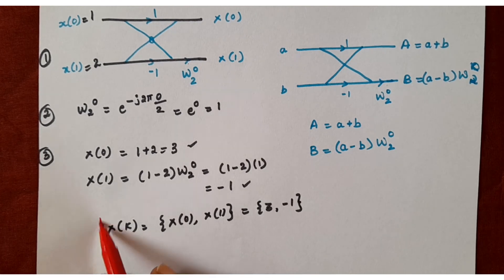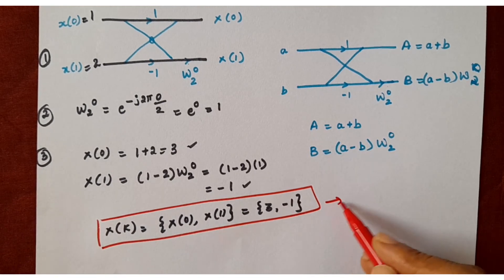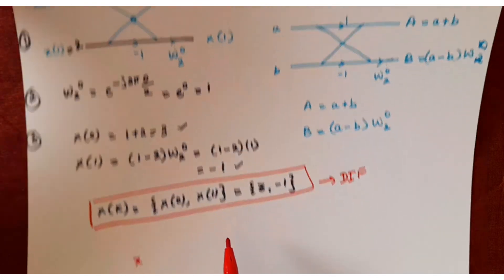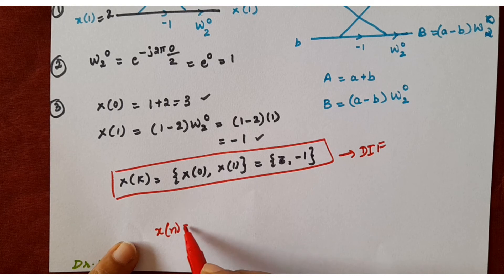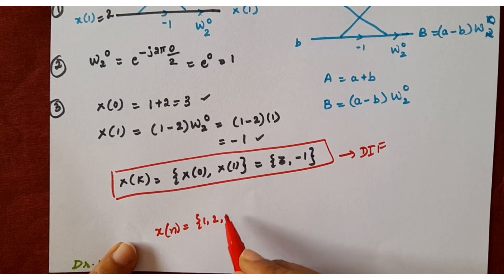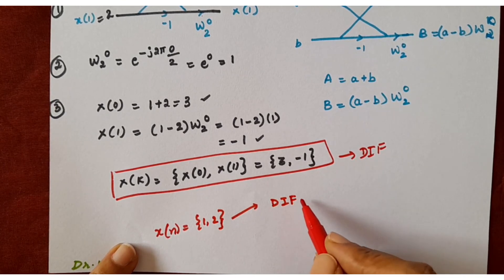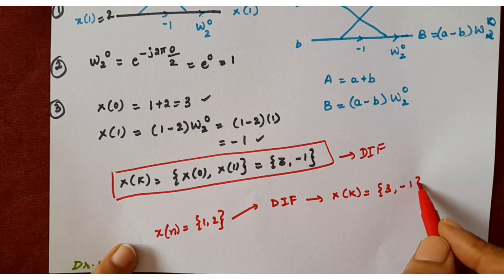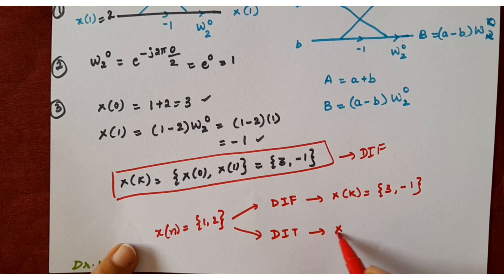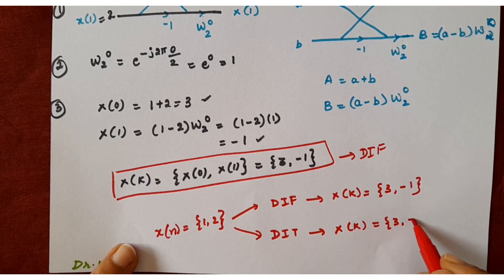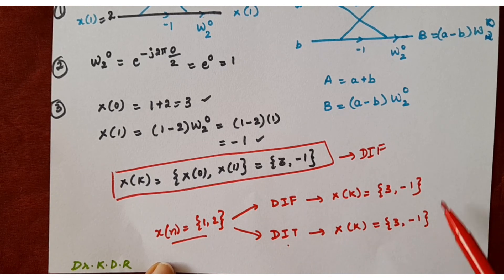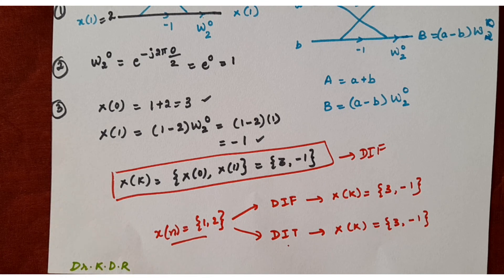Have you observed one important point here? Whether it is DIT or DIF, the result is the same. The given sequence x[n] = {1, 2}: applying DIT gives X[K] = {3, −1}, and applying DIF also gives X[K] = {3, −1}. For a given sequence, whether you apply DIF or DIT, the result will be the same. Thank you. I hope you have understood the class. If you have any inquiries, post in the comments. Good luck students.